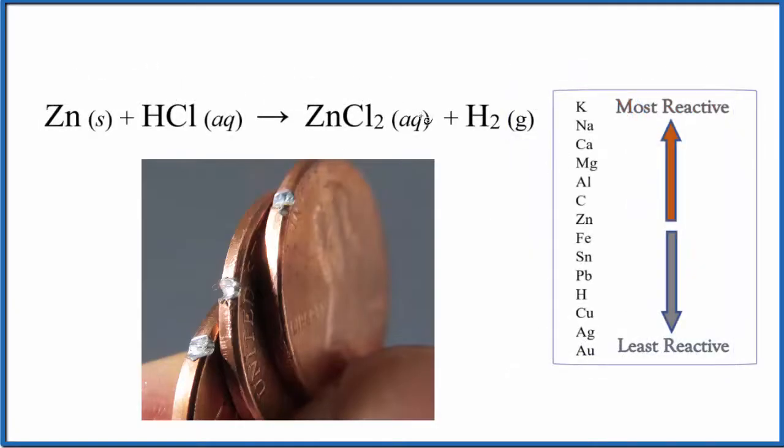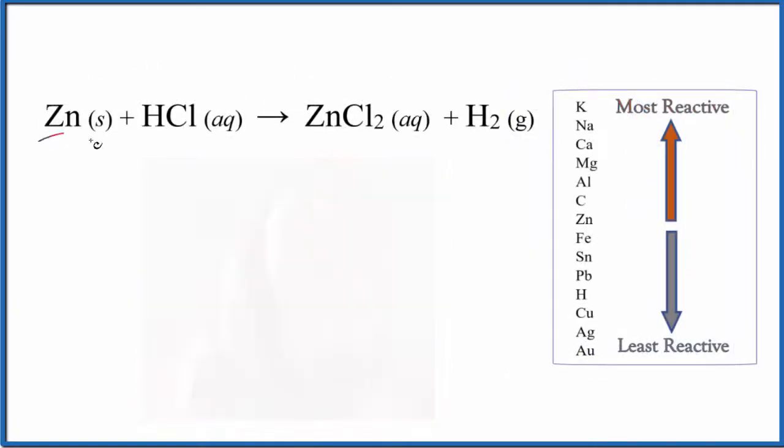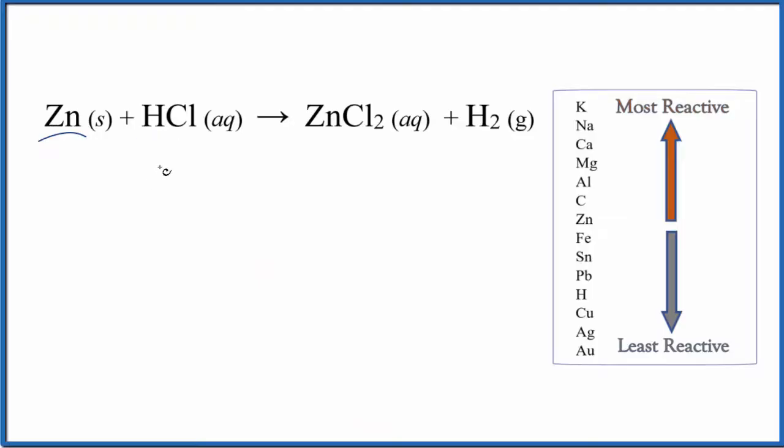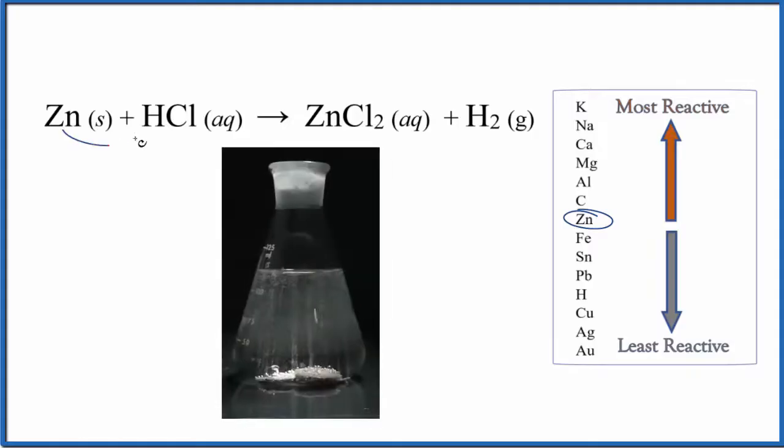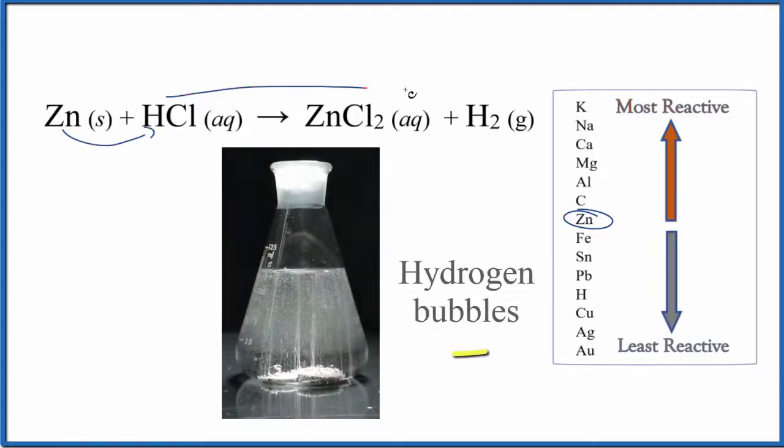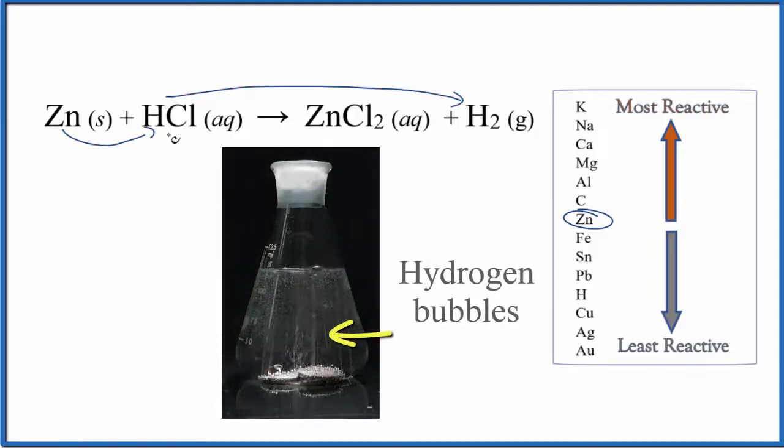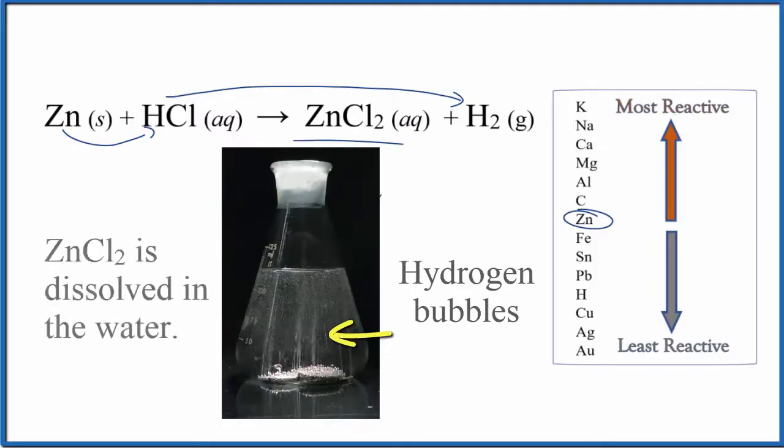So here's the reaction that could take place. We have zinc and hydrogen. These both form positive ions. We find zinc right here and then hydrogen. So zinc is higher up in the activity series. That means that zinc is going to be able to push the hydrogen out. The hydrogen will be all by itself. The zinc replaces the hydrogen. We get zinc chloride. So this reaction does happen.